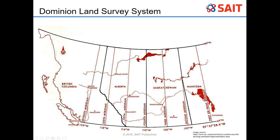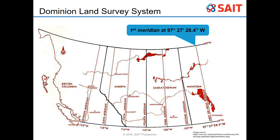Moving over to the second meridian at 102 degrees west, then four degrees to 106, another four degrees to 110, four degrees to the fifth meridian, and the sixth meridian at 118 degrees. The final meridian in the DLS system is at 122 degrees west. So our boundaries are from the first meridian at 97 degrees 27 minutes 28.4 seconds west, enclosed by the seventh meridian at 122 degrees west, bounded on the south by the 49th parallel and on the north by the 60th parallel.